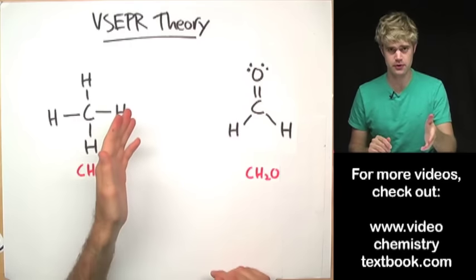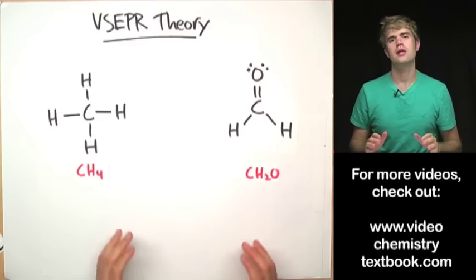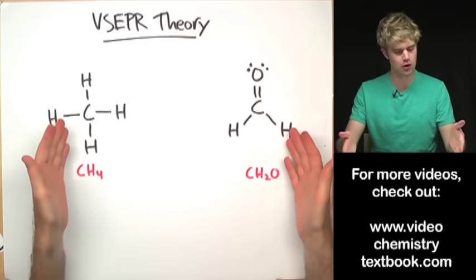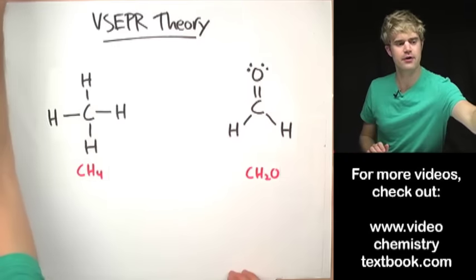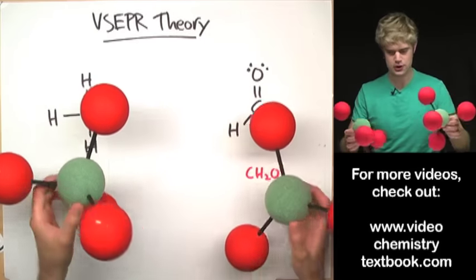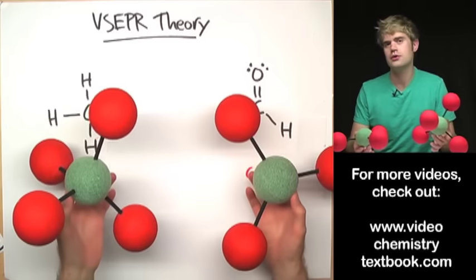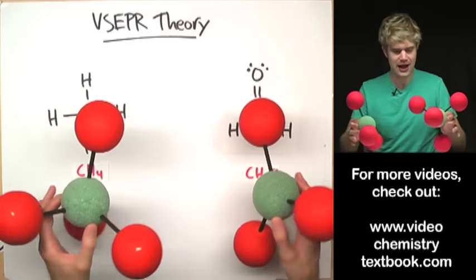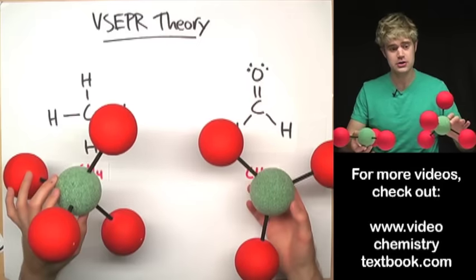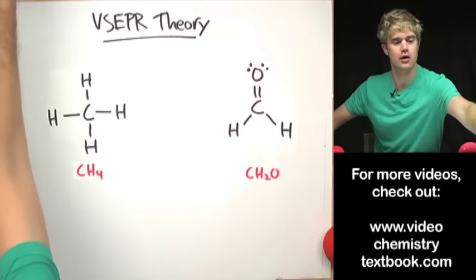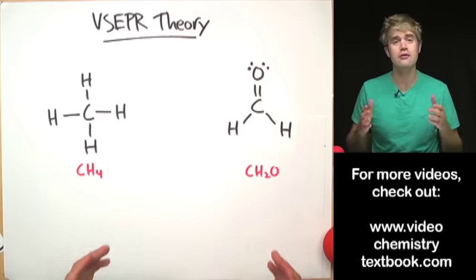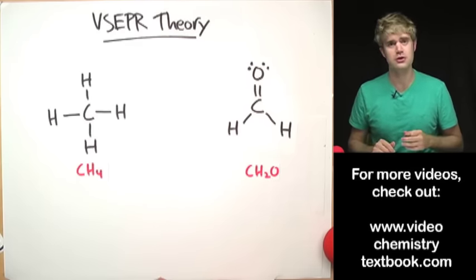This video is an introduction to VSEPR theory. VSEPR theory is a set of rules that we can use to look at a two-dimensional Lewis structure of a molecule and figure out what the molecule would look like in three dimensions. Because molecules are actual things in real life, they have three-dimensional structures that are often more complex than we can draw in two dimensions. So let's take a look at some Lewis structures and figure out what the 3D shapes of those molecules would be.